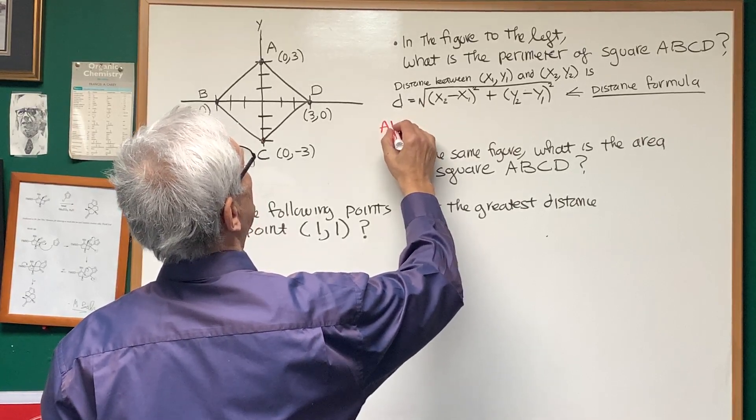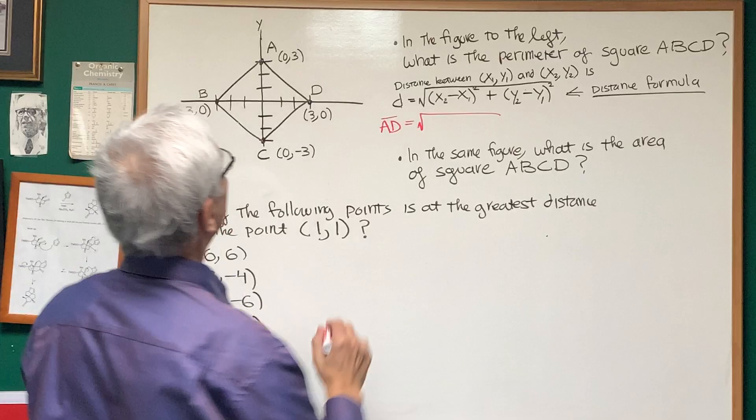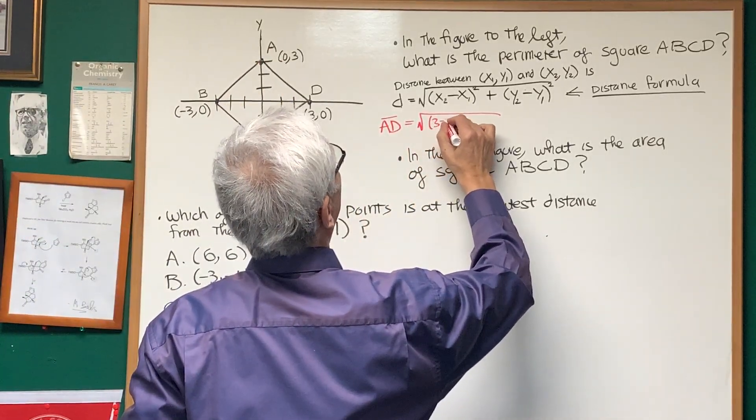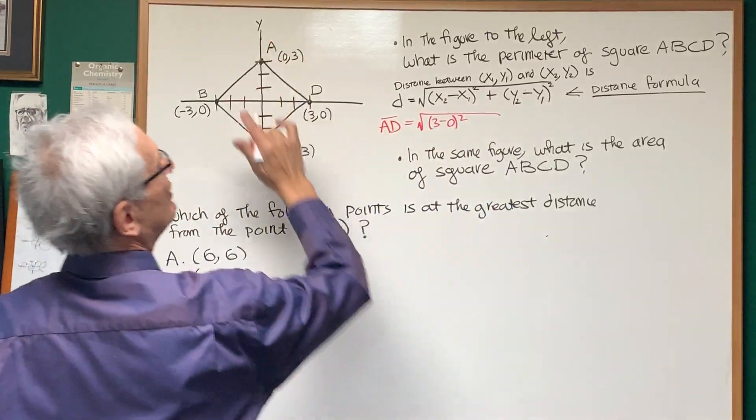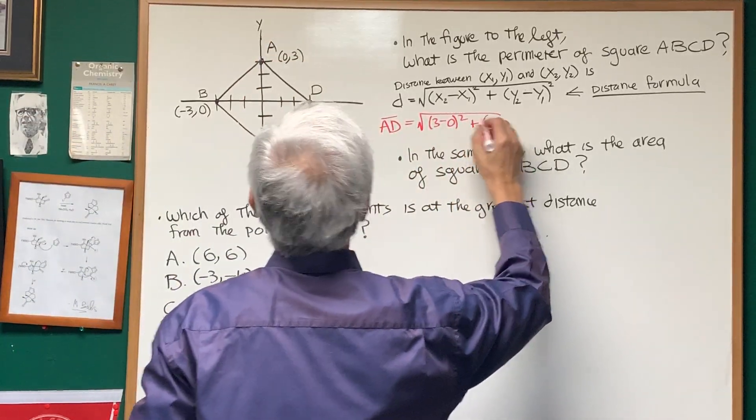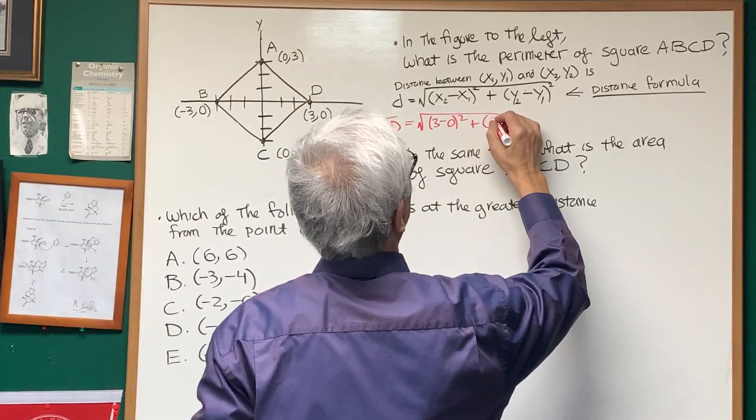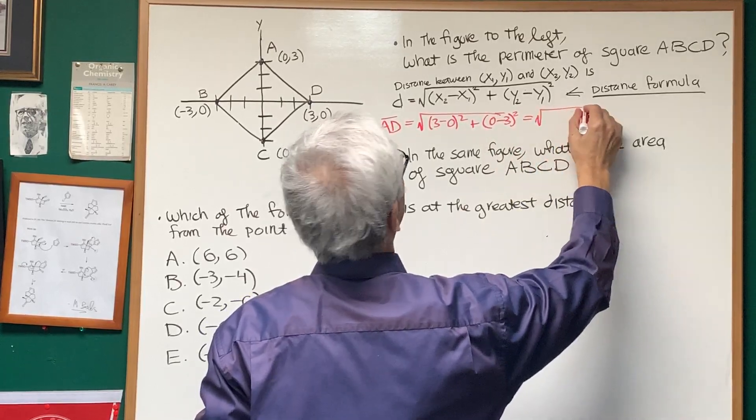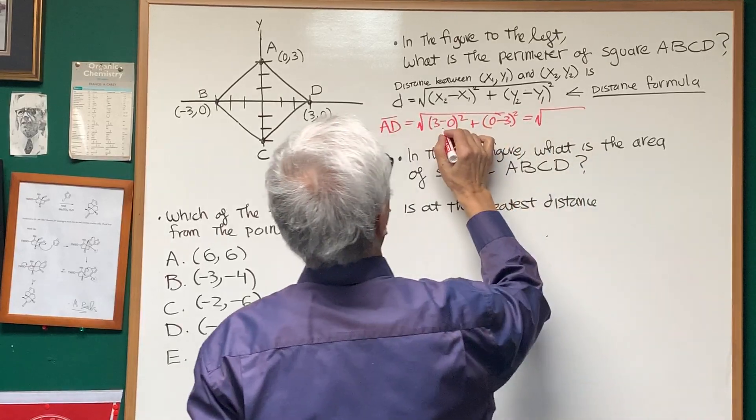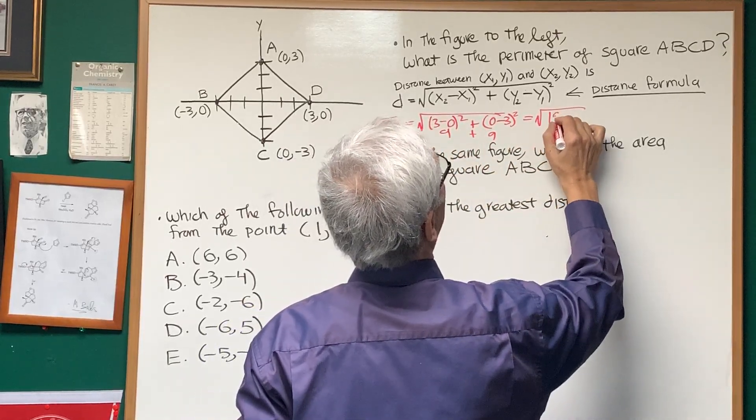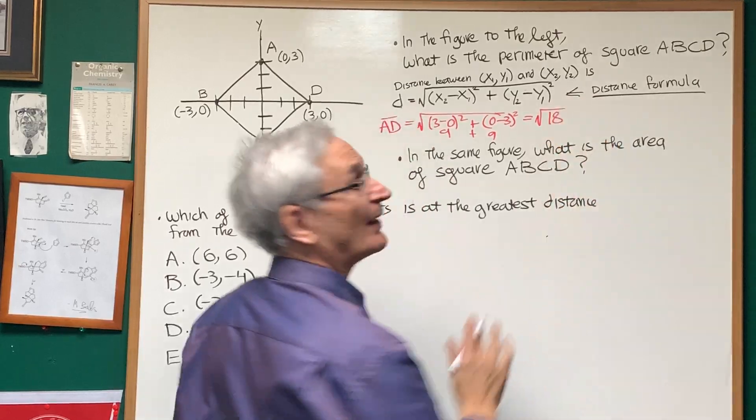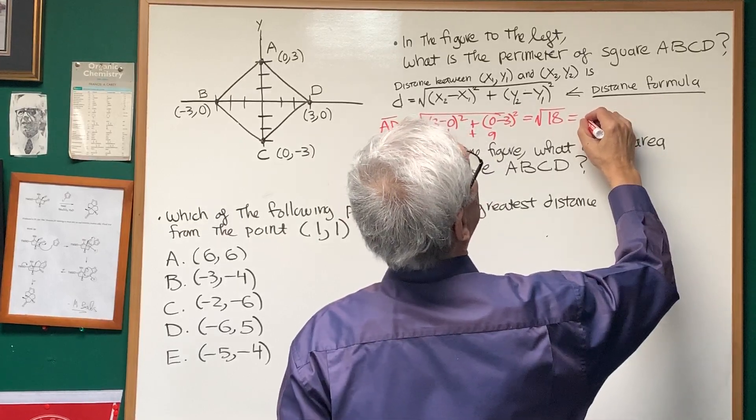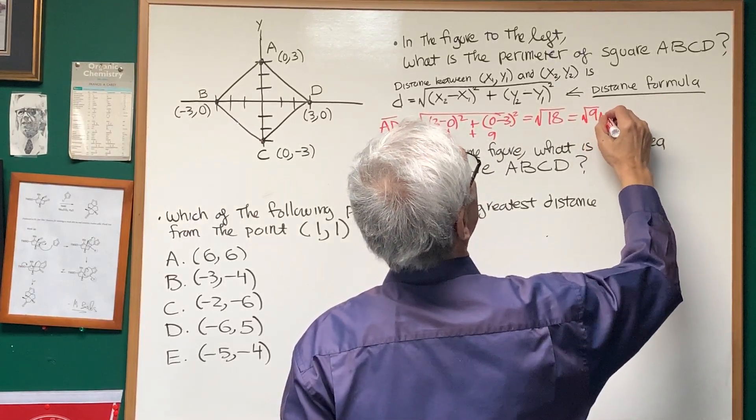...is going to be the square root of the difference between the x values, 3 minus 0 squared, plus the difference in the y values, 0 minus 3 squared. And what's that going to be? The square root of 3 squared plus 3 squared, that's 9 plus 9, that's the square root of 18. Okay, which if we want to simplify that, the square root of 18 equals the square root of 9 times the square root of 2, which is 3 times the square root of 2.